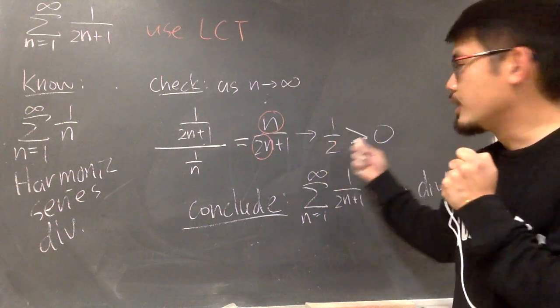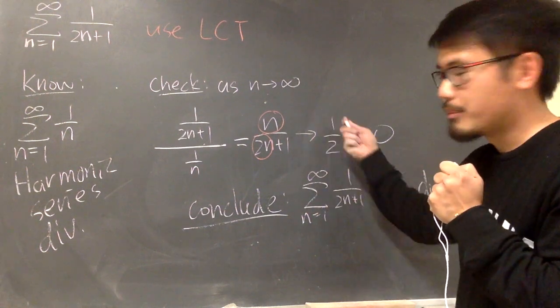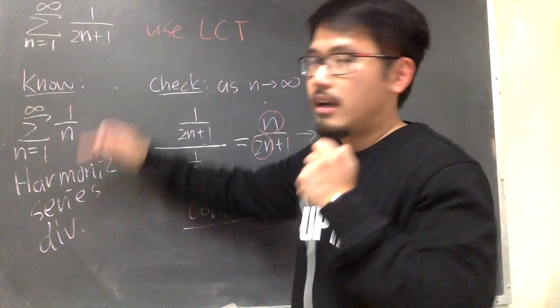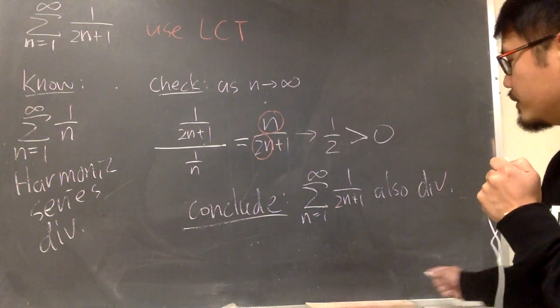as long as it's greater than 0 - I don't want infinity though - as long as it's a finite number greater than 0, we can say this and that have the same conclusion. This diverges, that also diverges. So this also diverges.